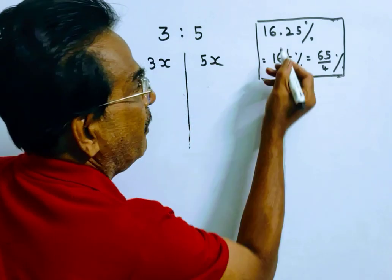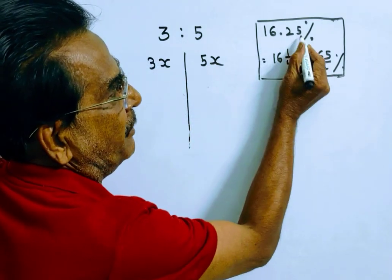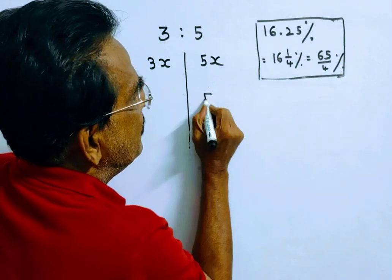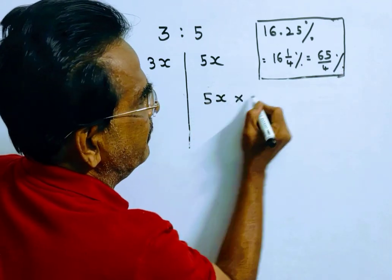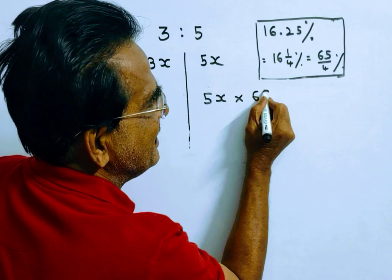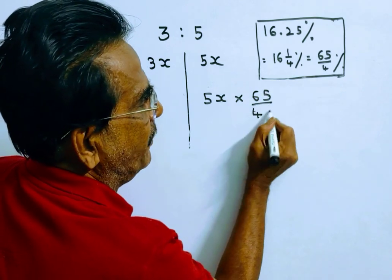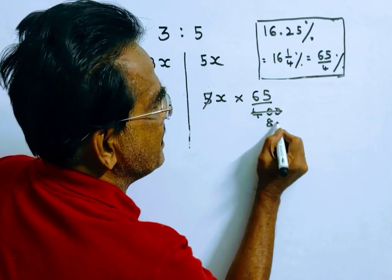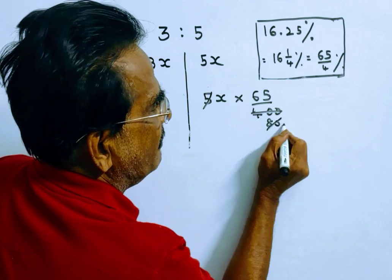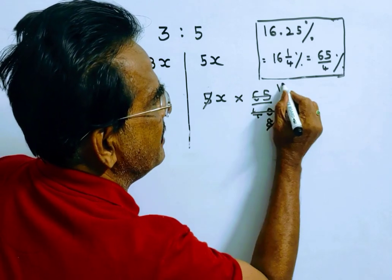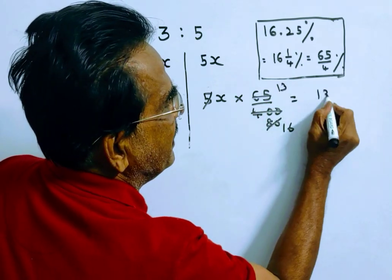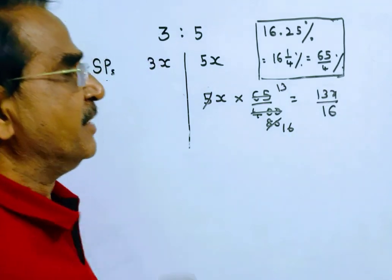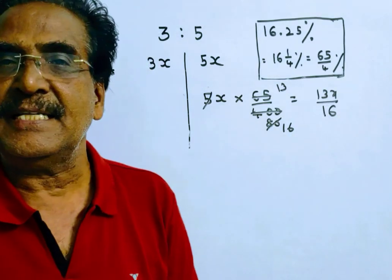The profit percent is 16.25%, that is equal to 65/4%. So the profit earned by the second salesman is 13x/16.